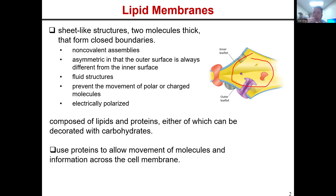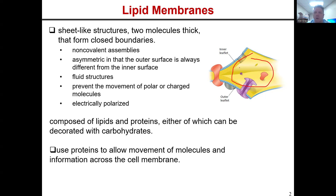At the center, that yellowish region is the hydrocarbon tails of fatty acids, of triacylglycerols, of glycerol phospholipids. They're non-covalent assemblies and they're asymmetric, meaning the outer surface is always going to be different from the inner surface — what's displayed outwards is not the same as what's on the inner portion.